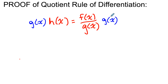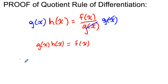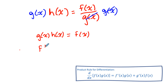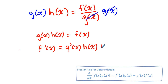On the right side, those cancel out, and what I'm left with is g(x) times h(x) on the left equals f(x) on the right. Now I know how to differentiate f(x) in this scenario because f(x) is a product of two functions. So f'(x) equals the derivative of the first function g'(x) times the second function h(x), plus the derivative of the second function h'(x) times the first function g(x).